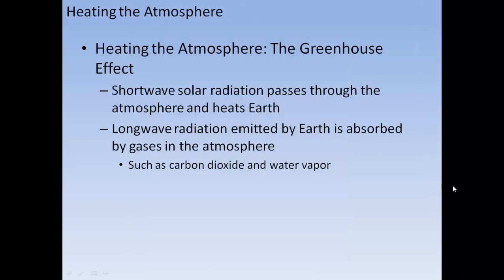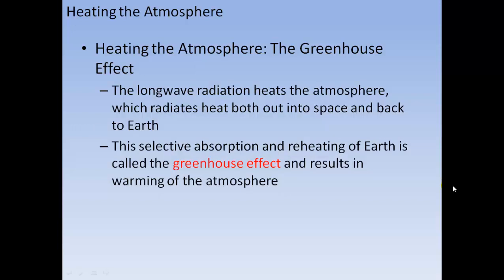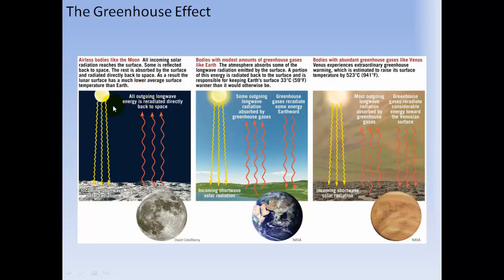Heating the atmosphere — the greenhouse effect: short-wave solar radiation passes through the atmosphere and heats the Earth. Long-wave radiation emitted by Earth is absorbed by gases such as carbon dioxide and water vapor. This long-wave radiation heats the atmosphere, which radiates heat both out into space and back to Earth. This selective absorption and reheating is called the greenhouse effect. By contrast, airless bodies like the Moon allow incoming solar radiation to reflect back into space. Bodies with abundant greenhouse gases like Venus experience major greenhouse warming, with temperatures reaching 941 degrees Fahrenheit.